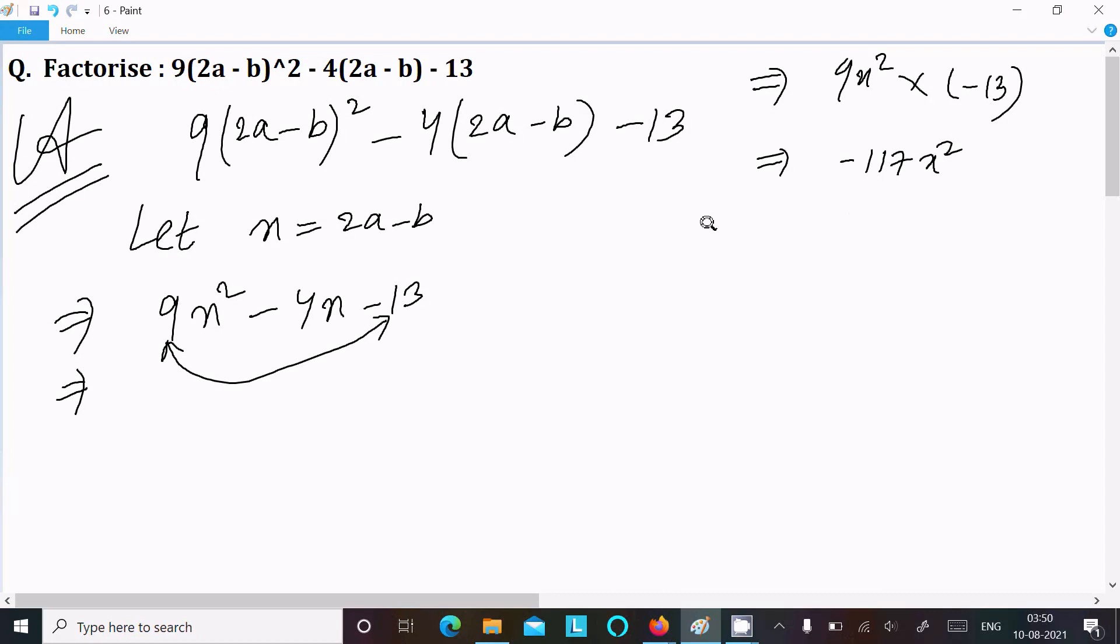Now thereafter take here middle term. So middle term is -4x. We can write -4x as 9x + 5x, so it's equal to -4x. But when I multiply -9x into 5x, it comes -45x². This is not the same, so we cannot take this combination.